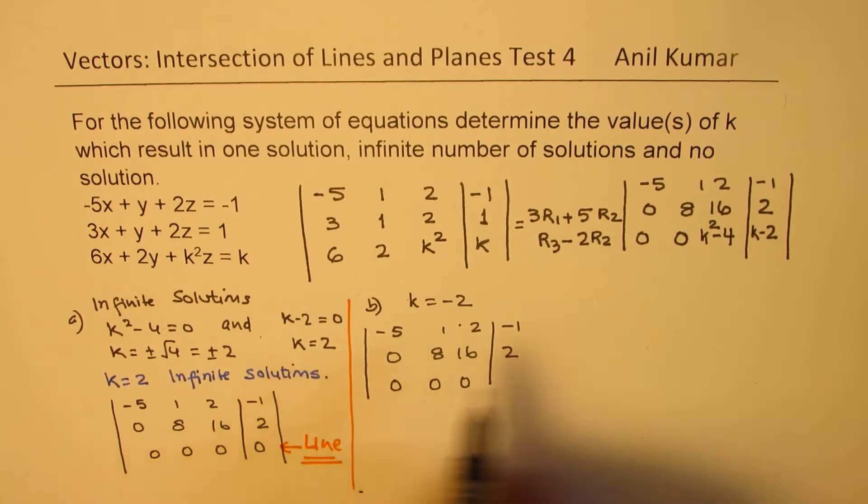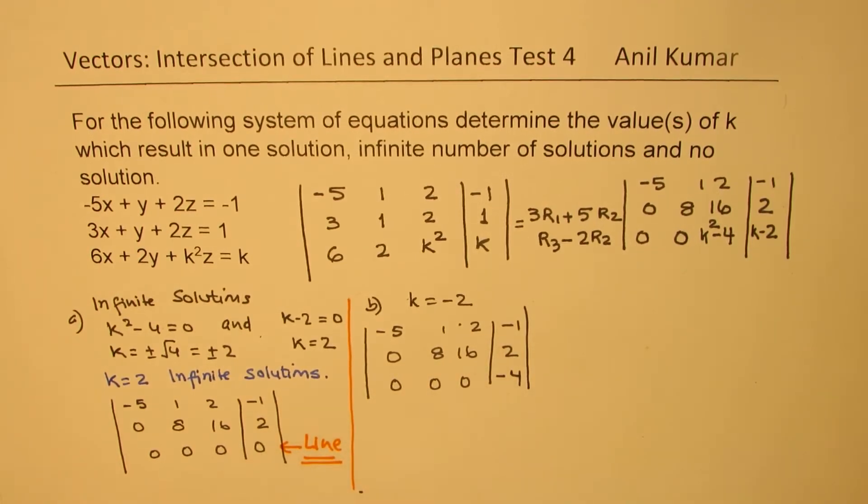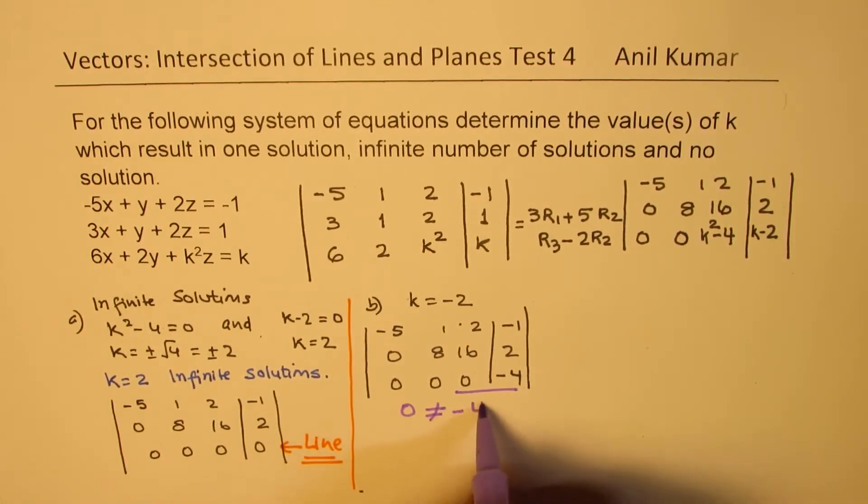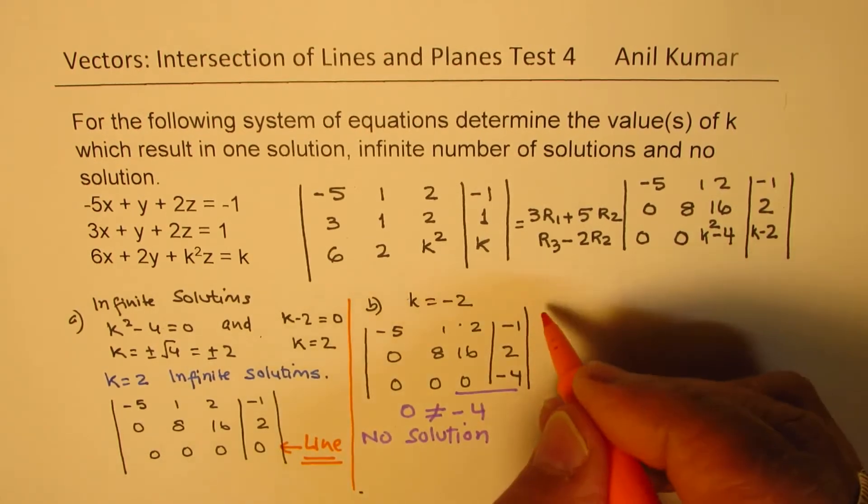we get minus 4 here. And since 0 is not equal to minus 4, we have no solution. So k equals to minus 2 means no solution for us.